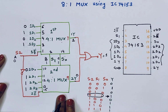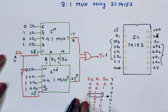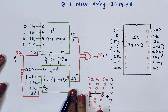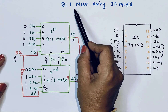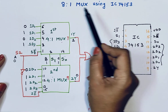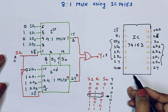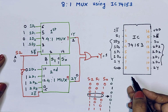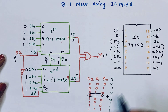In this way you can verify the truth table, and in this way we can implement an 8-to-1 multiplexer using IC 74153. Thank you so much for watching this video.